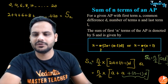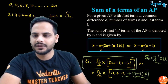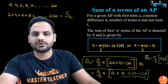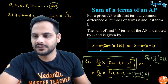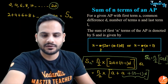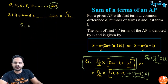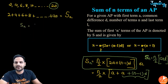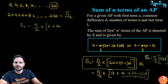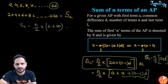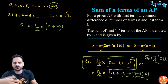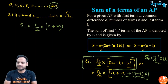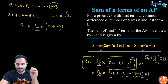If the last term is given, use S_n = n/2 × (a + l). If only a and d are known, use S_n = n/2 × (2a + (n−1)d). For example, with the AP 2, 4, 6, ..., 20, last term is 20 and first term is 2, so find n first and then apply the formula.